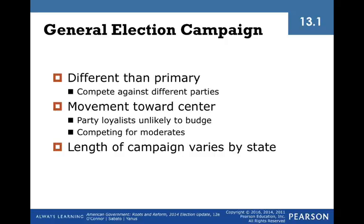Once a candidate has won the primary nomination, they must switch gears and pivot to the general election. In the general election, they are running against nominees from other parties. Most partisan voters are unlikely to change their party loyalty, so candidates are really competing for the very few undecided voters in the middle of the political spectrum. The whole general election campaign is geared to wooing these undecided voters, not the partisan voters who have already made up their minds.